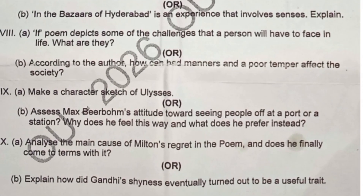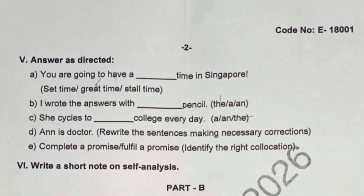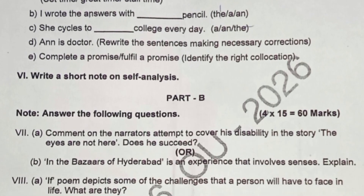The fifth bit from English is a fill-in-the-blank: 'You are going to have a ___ time in Singapore' — dash time, great time, or stall time. The answer is 'great time.' The sixth question asks you to write a short note on self-analysis — how we should trust ourselves and what strategies support self-analysis. For a four-mark theory question, a minimum of one side of a page is enough.